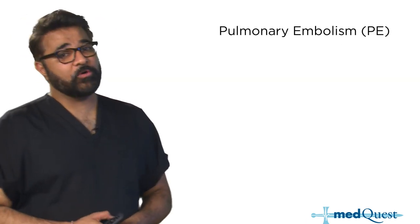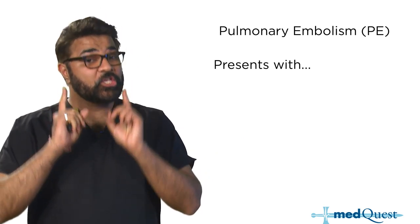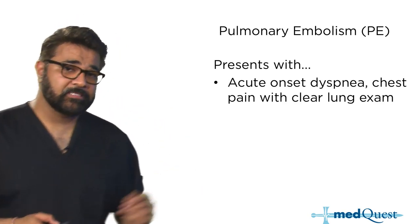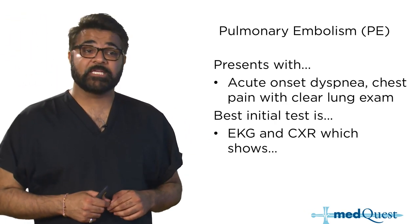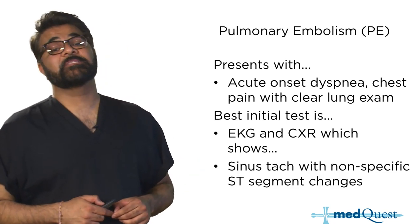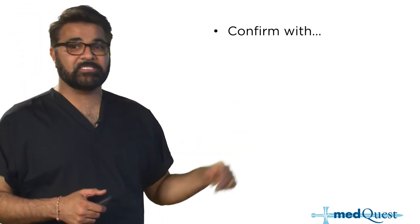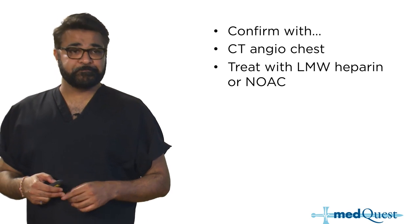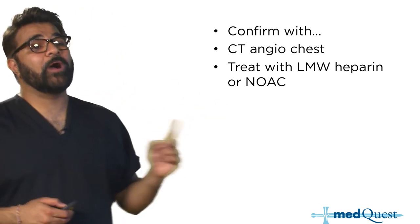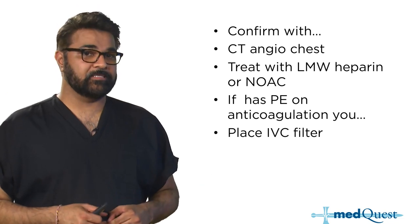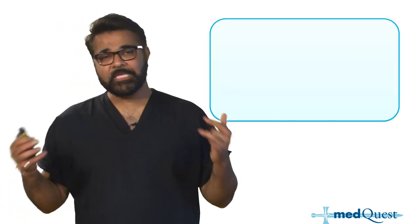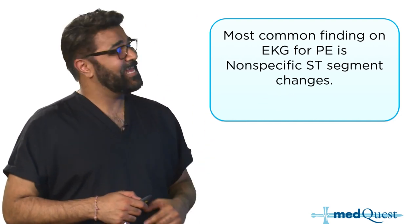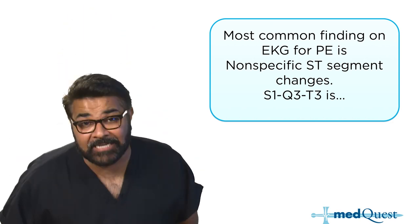Pulmonary embolus can occur in the post-op period, presenting with acute onset of dyspnea and a clear chest exam. The best initial test is an EKG and chest X-ray showing sinus tachycardia with nonspecific ST segment changes. Confirm with CT angiography of the chest and treat with low molecular weight heparin or a novel anticoagulant. If PE occurs while on anticoagulation, place an IVC filter. Note: the most common EKG finding is nonspecific ST changes — S1Q3T3 is not the most common.